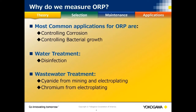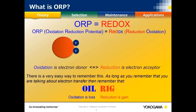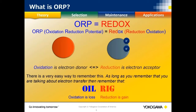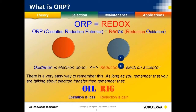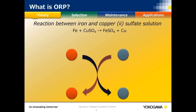Why do we measure ORP? ORP measurements are less common than pH measurements in your plant, but you'll find them anywhere there's corrosion control, bacterial growth, or water disinfection. We also see them in electroplating where cyanide and chromium are used — the end product can be very toxic, so we perform two different ORP reactions to bring it to a non-toxic form.